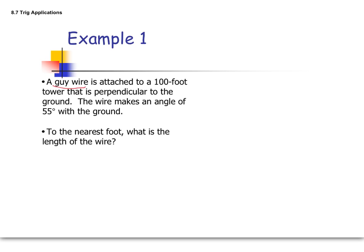So we have a guy wire attached to a 100-foot tower, perpendicular to the ground. The wire makes an angle of 55 degrees with the ground. What's the length of the wire? So already your head is spinning, there's a lot going on here. What you need to do with all of these trig problems, with any word problem like this, is draw a picture.